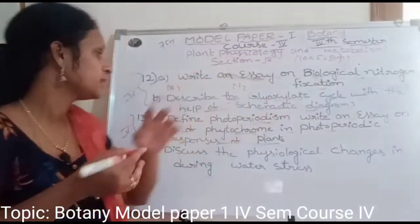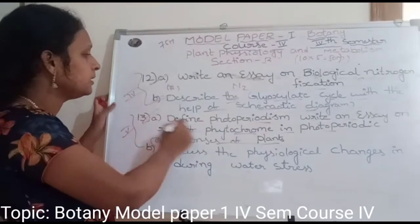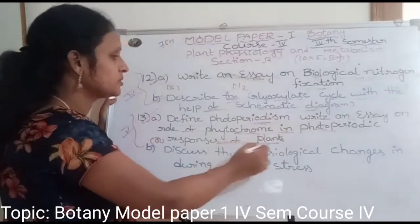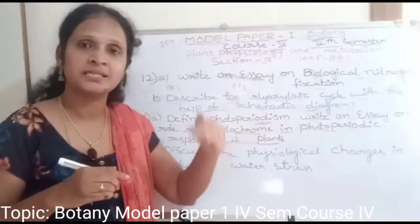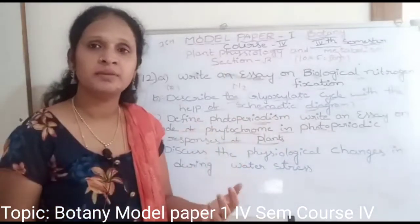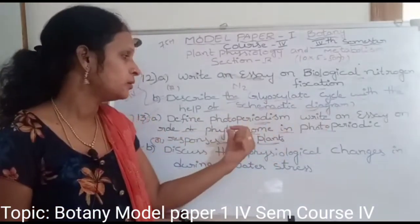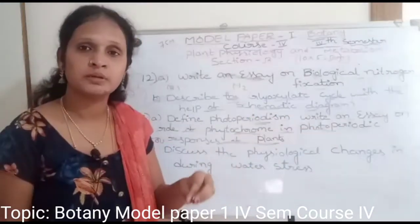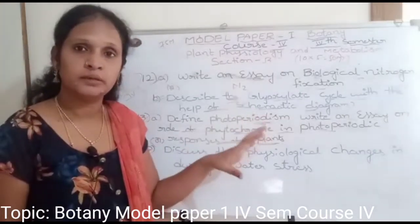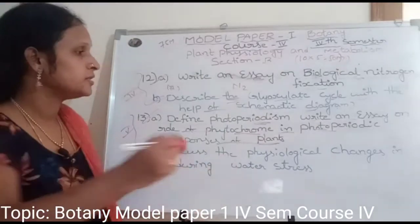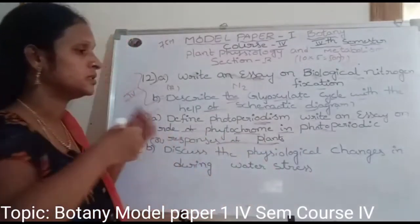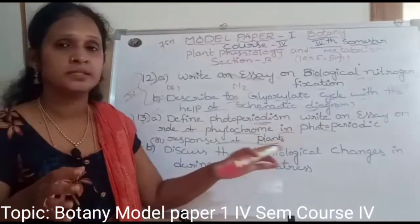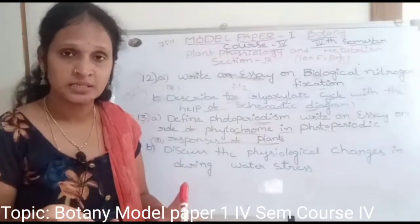Last questions: 13a — Define photoperiodism and write a note on the role of phytochrome in photoperiodic response of plants. Photoperiodism is the plant's response to sunlight. Phytochrome is a hormone that plays a role in photoperiodic response. 13b — Describe the physiological changes during water stress condition. Water stress means without water, and we explain what physiological changes occur in plants.